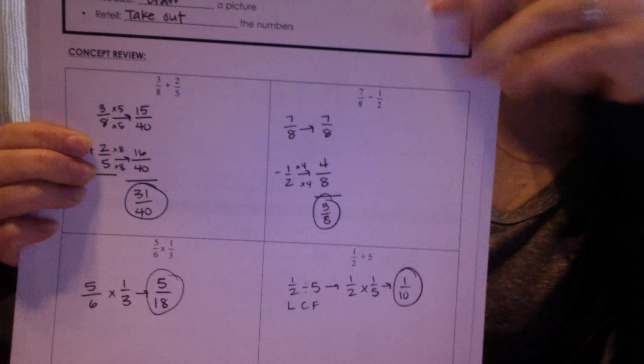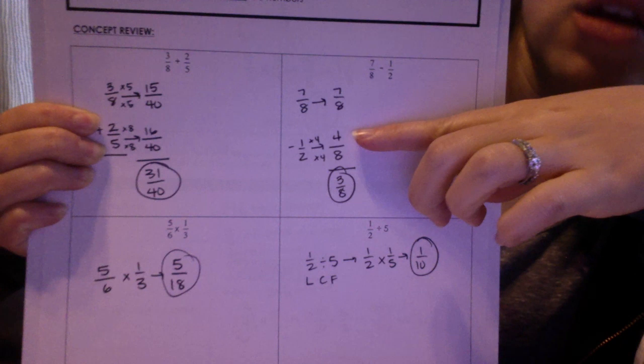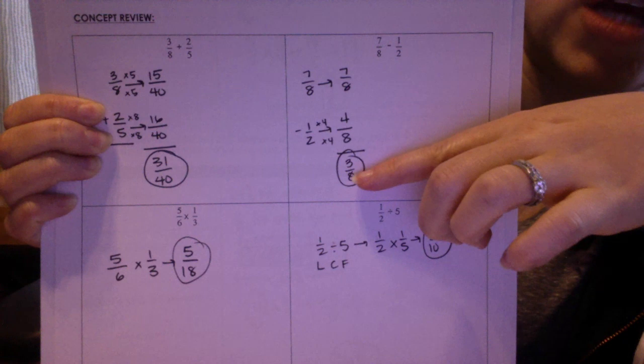The next one is 7 eighths minus 1 half. So actually 7 eighths can just stay the same because a common denominator between 2 and 8 can be 8. So the only thing you have to change is 1 half and turn that into 4 eighths. So that 7 eighths minus 4 eighths is 3 eighths.